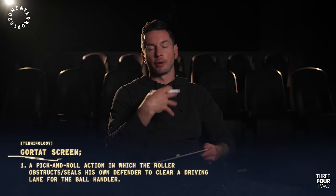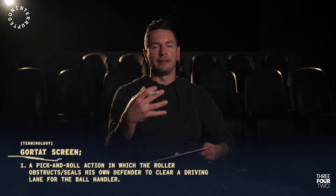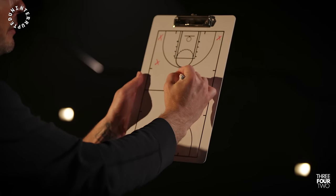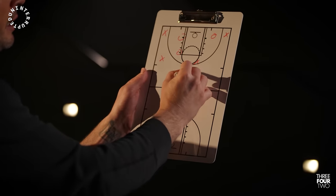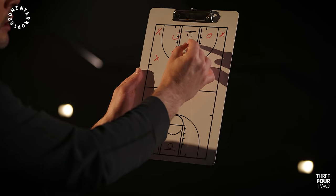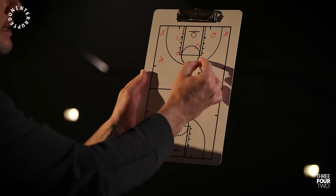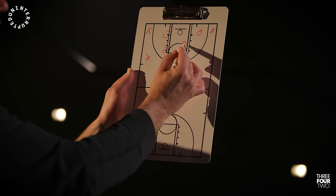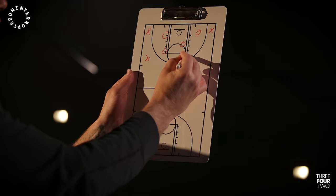The other type of assist we talk about is the hockey assist. In hockey, if a player passes the puck to another player who then passes to a goal scorer, he gets an assist. A hockey assist is simply the pass that leads to a pass that leads to a score. For example, in a high pick and roll, if the ball handler passes to the big man on the short roll, and the short roller passes to the wing, and the wing swings to the corner for an open three, that's a hockey assist.